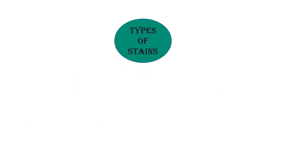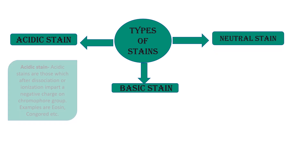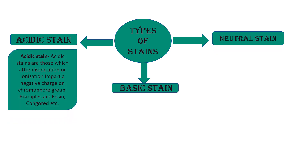Now, types of stains. Generally there are three types of stains: acidic stain, basic stain, and neutral stain. Acidic stains are those which, after dissociation or ionization, impart a negative charge on the chromophore group. In simple words, the chromophore group present in an acidic stain contains a negative charge. Examples are eosin and Congo red.